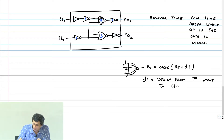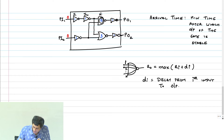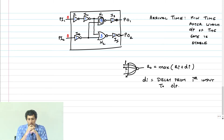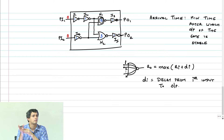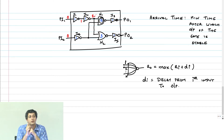Arrival time at the primary inputs is marked as 0. Let me label the gates: inverters I1, I2, NAND gate N1, inverters I3, I4, NOR gate N2, and I5. What is the arrival time at the output of I1? Zero plus the delay through the inverter, so arrival time is 1. Arrival time at I2 will be 2. What about arrival time at N1? Be careful here.